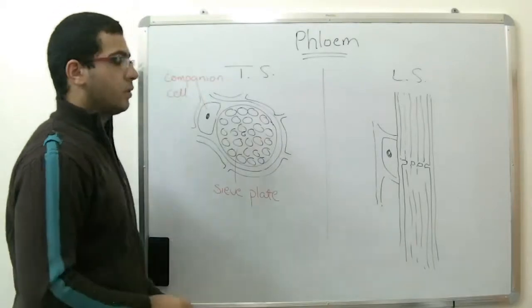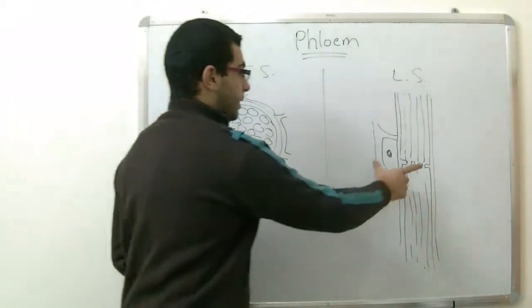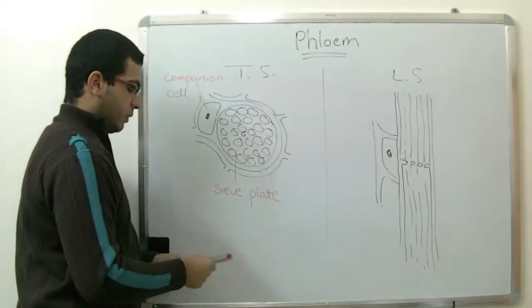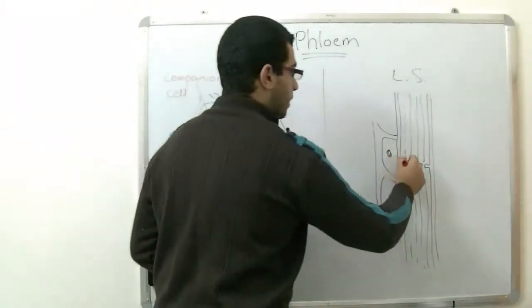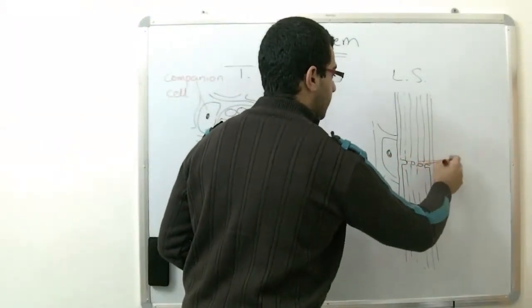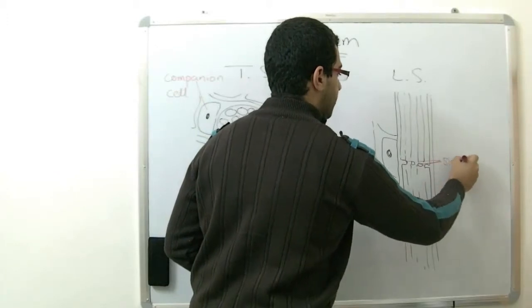This is the longitudinal structure. This part is the one that's created here because those pores are the ones like this. So this is the sieve plate.